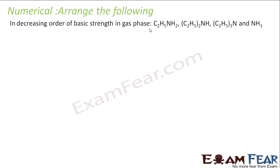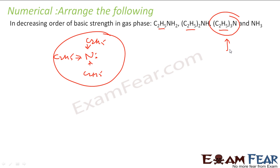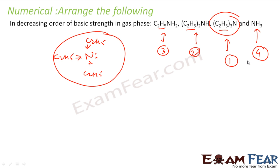We have to write the decreasing order of basic strength in the gas phase. In the gas phase, solvation is not considered. I have (C2H5)NH2, (C2H5)2NH, and (C2H5)3N. In gas phase, more alkyl groups mean more electron donation to nitrogen, so (C2H5)3N is most basic, then (C2H5)2NH, then C2H5NH2, and NH3 has no alkyl group so it is the least basic.